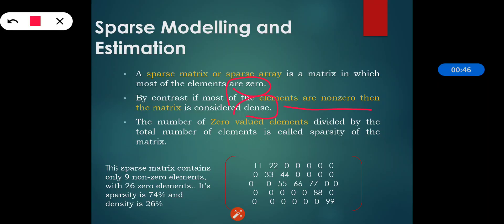The number of zero-valued elements divided by the total number of elements is called the sparsity of that particular matrix. It is generally equal to 1 minus the density of that particular matrix.